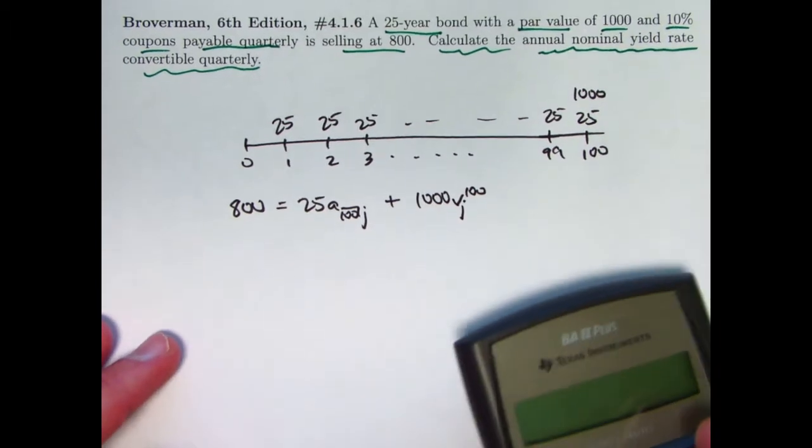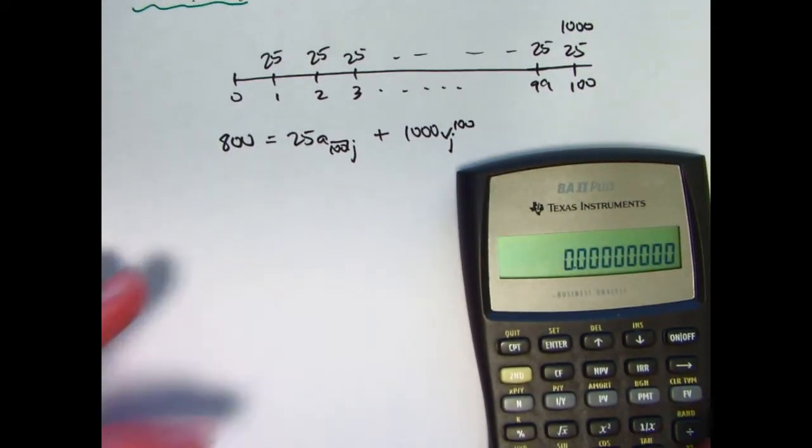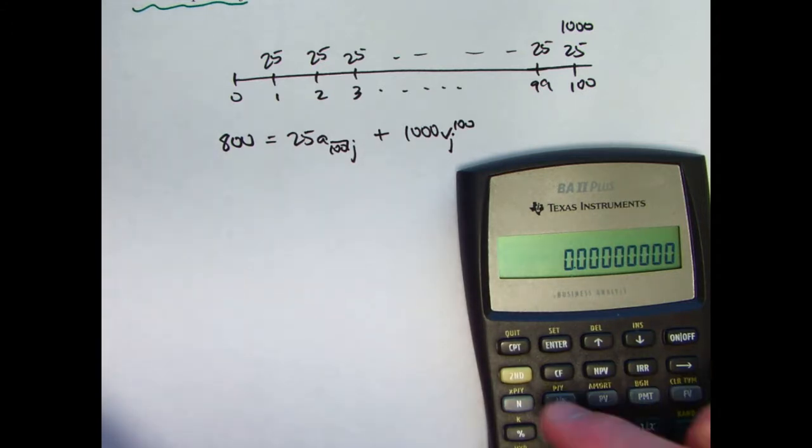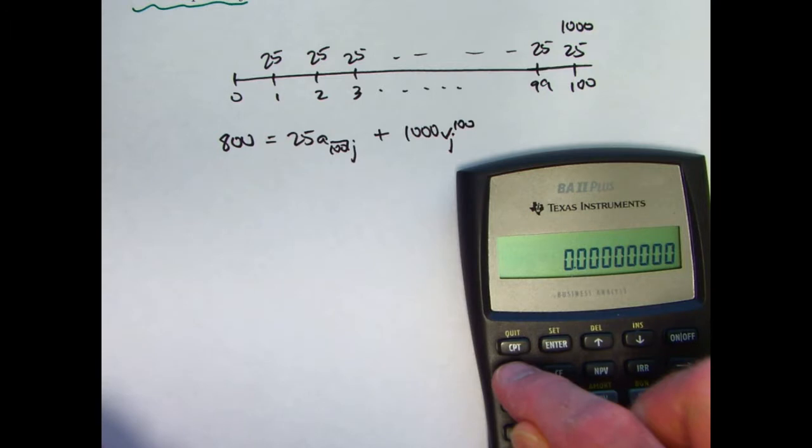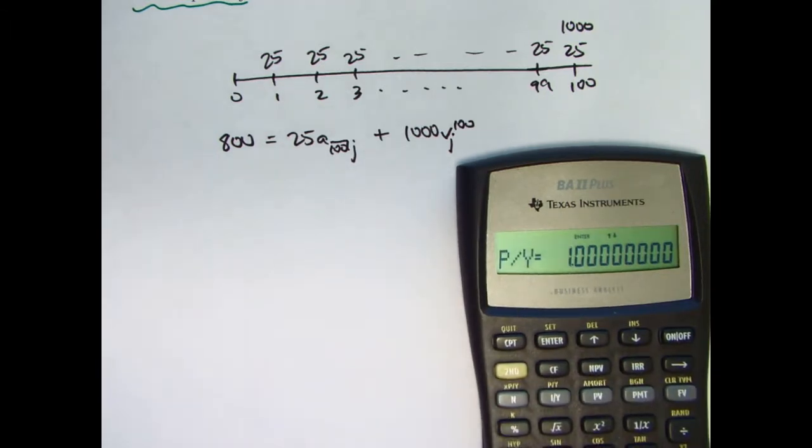As a default, I like to keep my payments per year quantity set at 1. If you press the second function button and then press this one, it's set to 1. Now in this problem, it's not going to represent payments per year—it's going to represent payments per quarter.